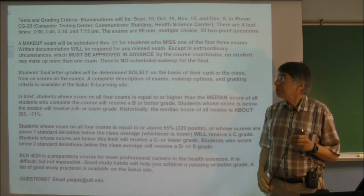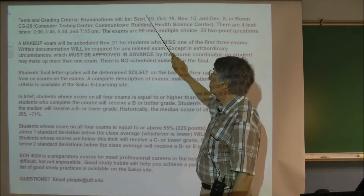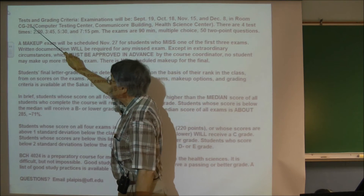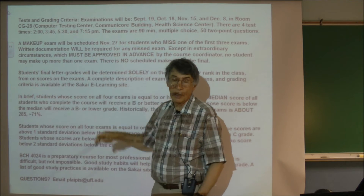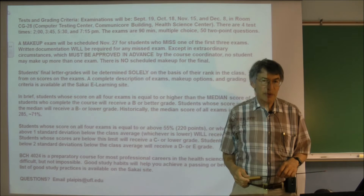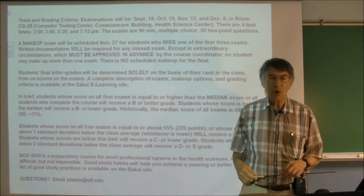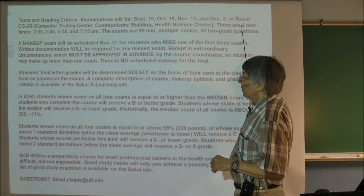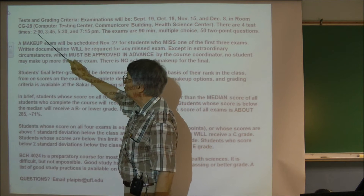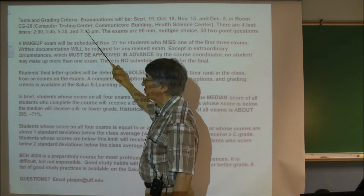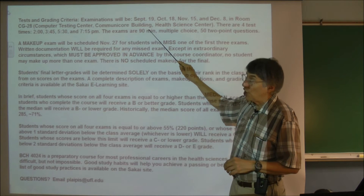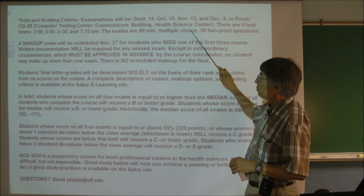There are four examinations: September 19th, October 18th, November 15th, and December 8th. These exams are in CG28, the Health Science Center Computer Test Center — that is the only exam location, in the CommuniCorps building. Before the first exam, I will lead a hike from the MSB Auditorium to CG28 so everyone knows where it is. Because there are so many students, exams are given at four different times: generally 2:00, 3:45, 5:30, and 7:15, with minor variations noted in the syllabus. Exams are 90 minutes long and consist of 50 two-point multiple-choice questions.